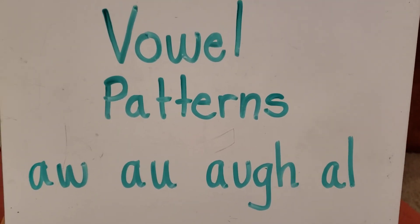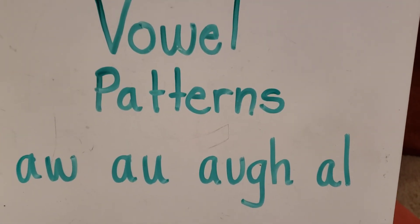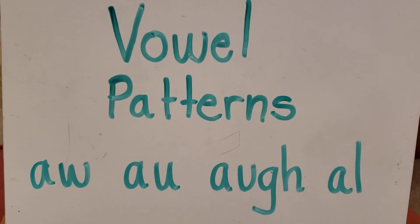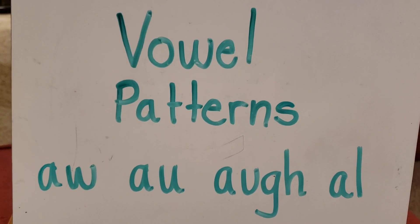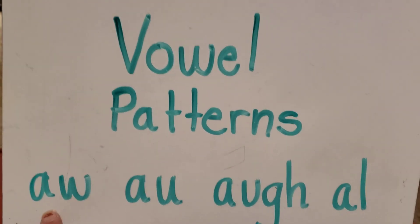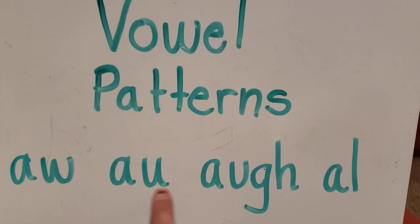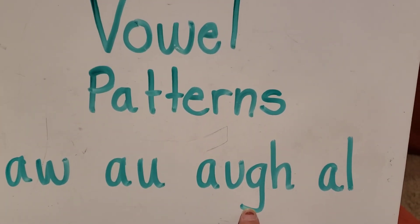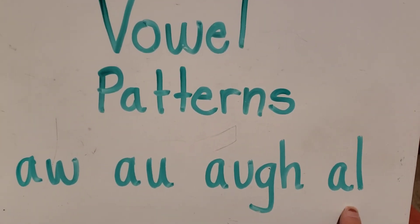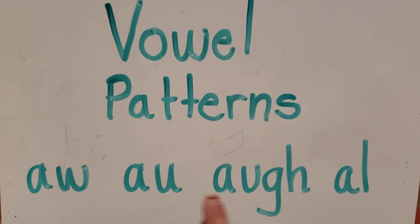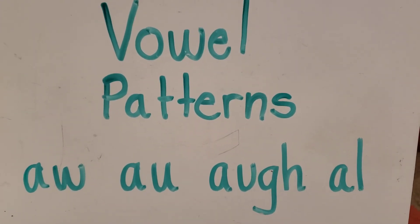Hi, 7th graders. Today we're practicing a new vowel pattern: AW, spelled A-W, A-U, A-U-G-H, and A-L. All of these say AW.